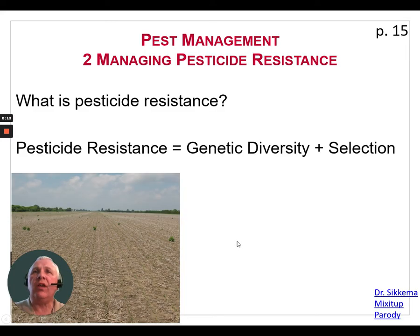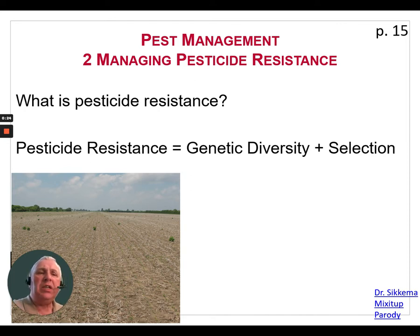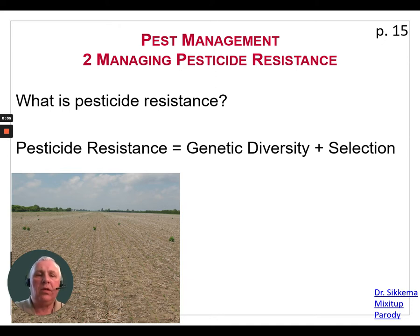So what is pesticide resistance? Pesticide resistance is genetic diversity and selection. With genetic diversity, some individual plants within the species are naturally resistant to a pesticide. When these resistant pests reproduce, the next generation of pests — like their parents — will not be controlled by that family of pesticides. Resistance may also develop if you use the same pesticide season after season without switching to a different pesticide.